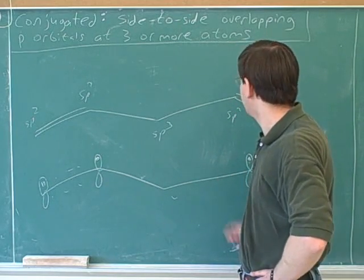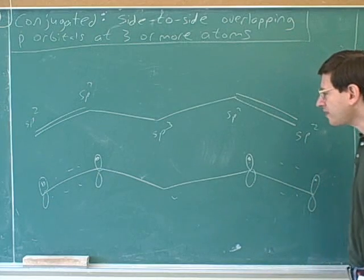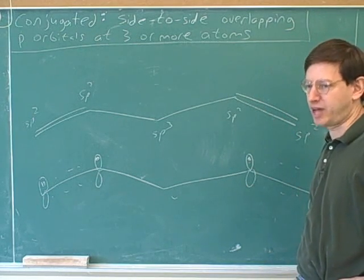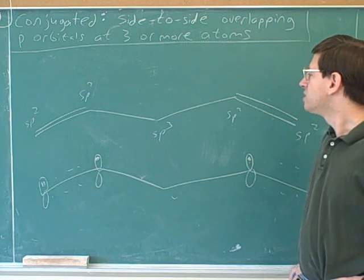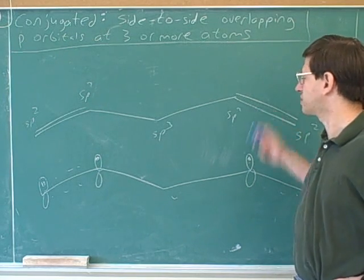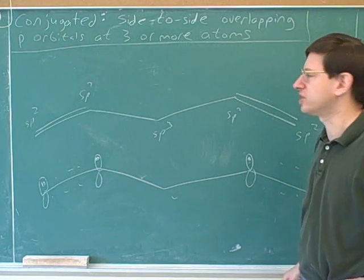So we do not have a conjugated system over here, which means that this does not get any extra stability. Remember that if something was conjugated, it would have more stability. So which is more stable? So we would expect, again, this is not getting that extra stability from conjugation.